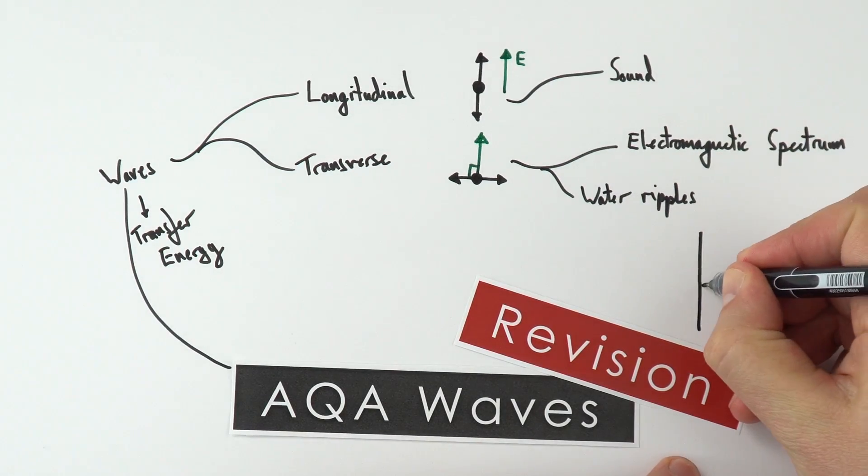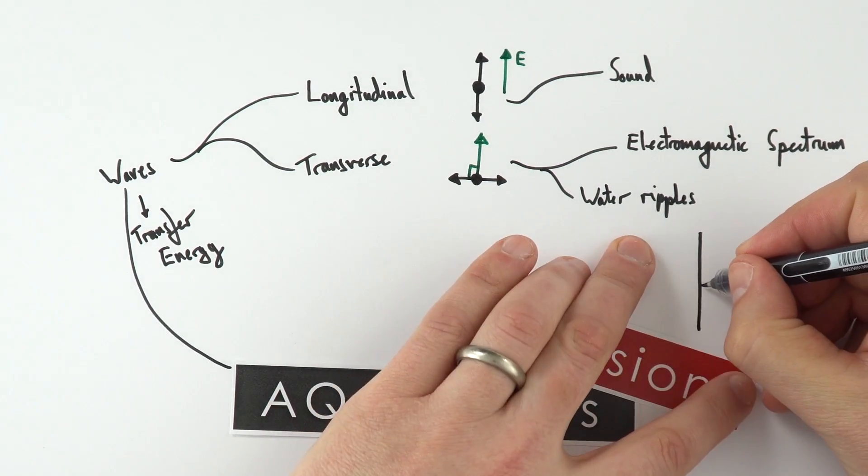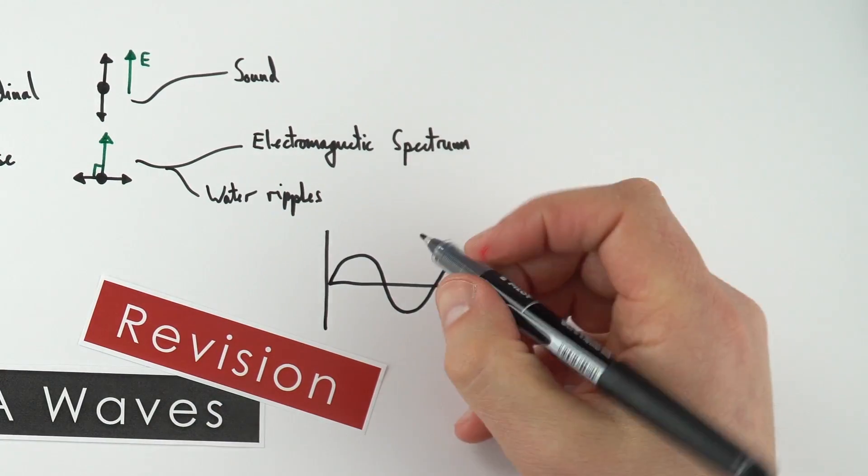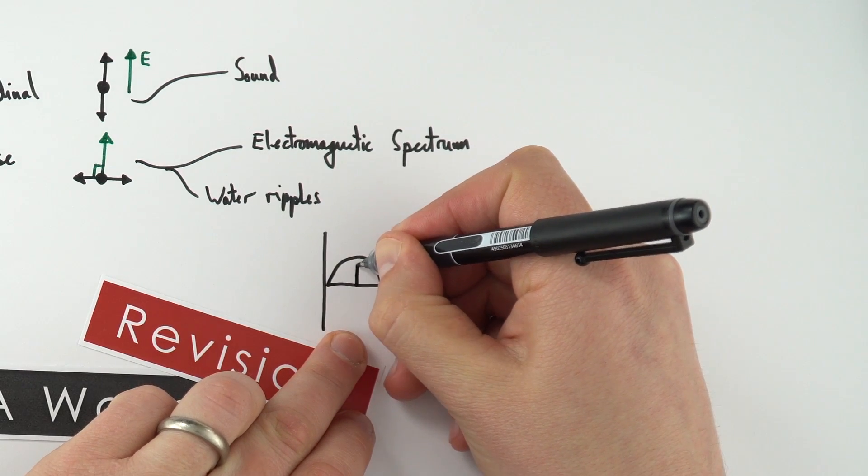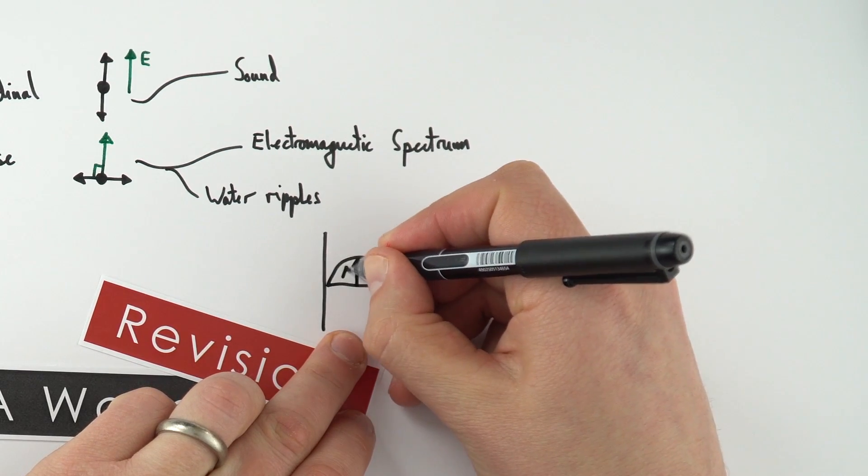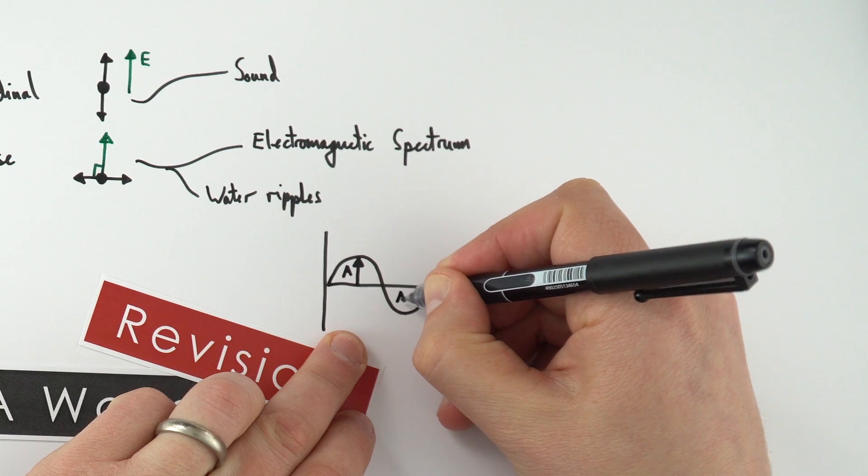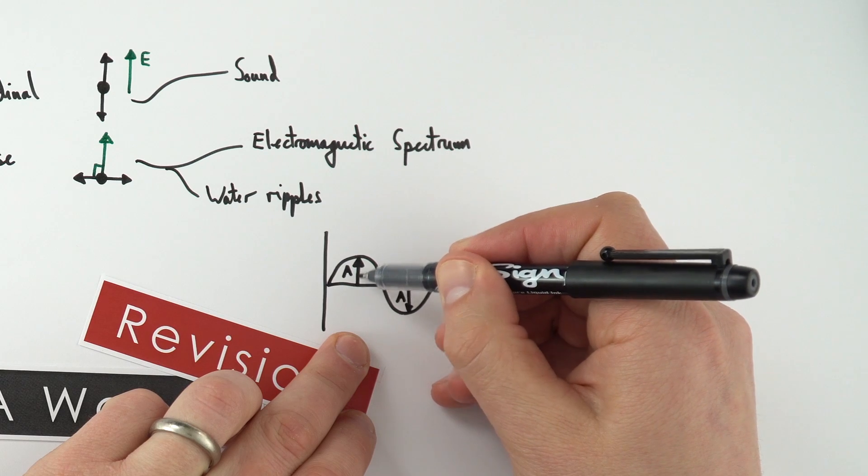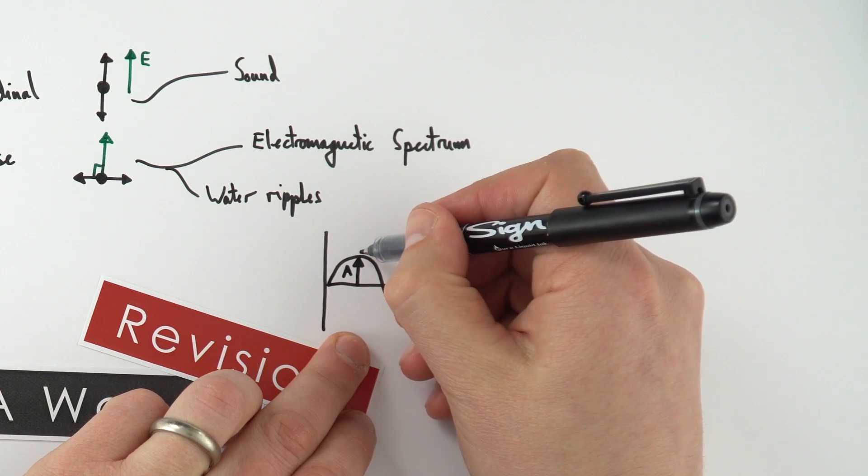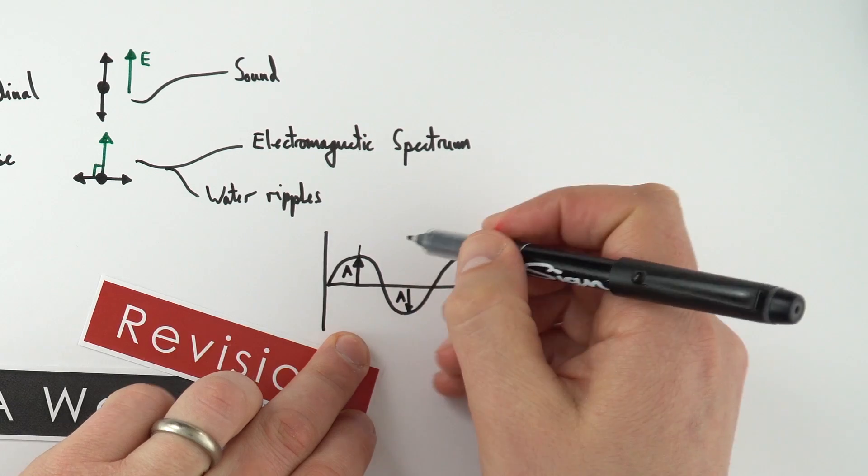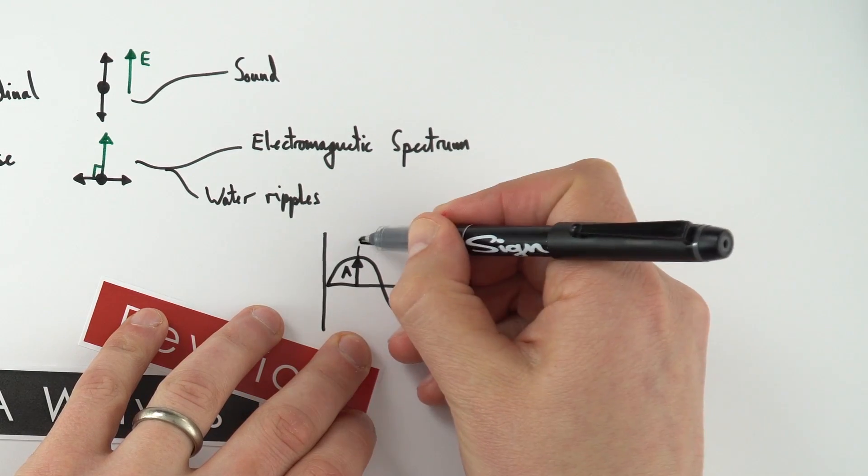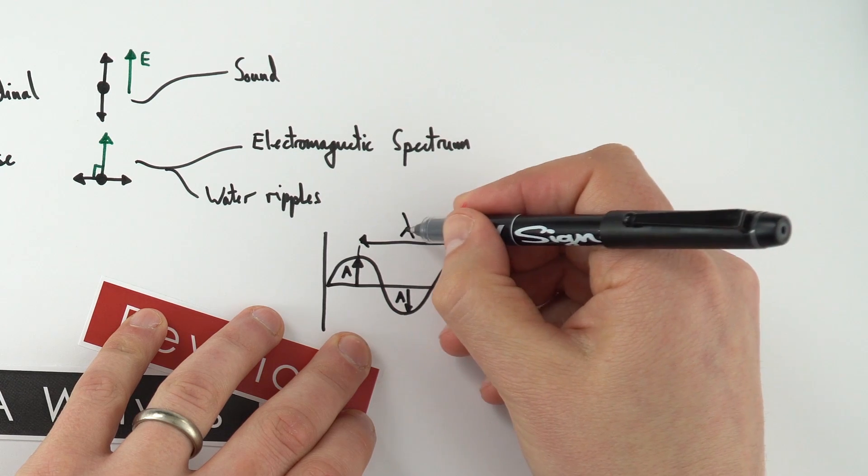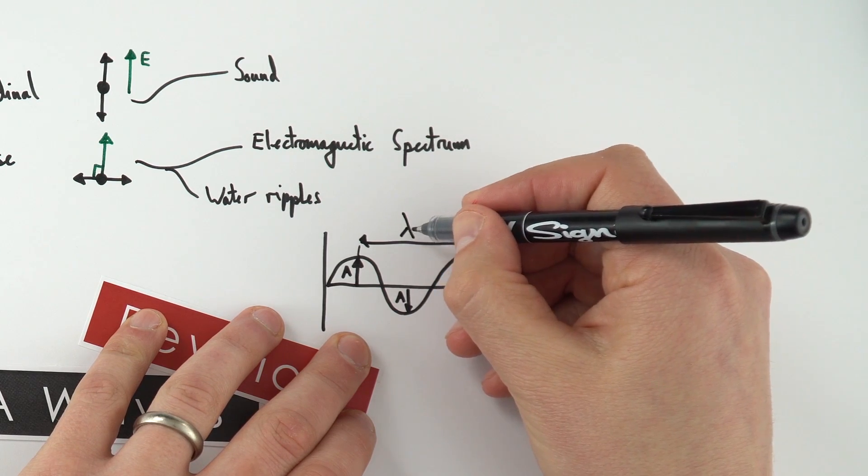If we look at the position of particles along something which is vibrating, we can look at the distance of particles from their rest position. This distance is known as the amplitude. There's also a distance which is one complete wave cycle, known as the wavelength. We give the wavelength the symbol lambda, a Greek letter, a bit like an upside down Y.